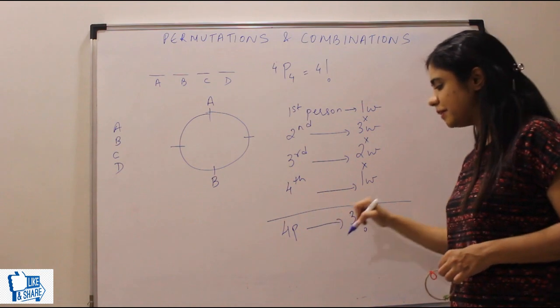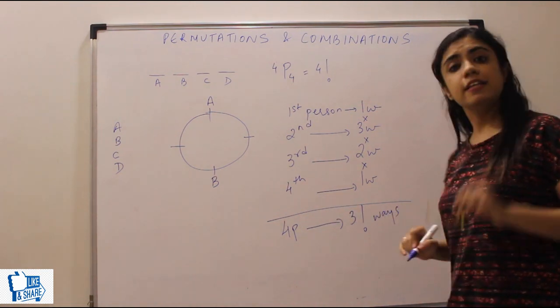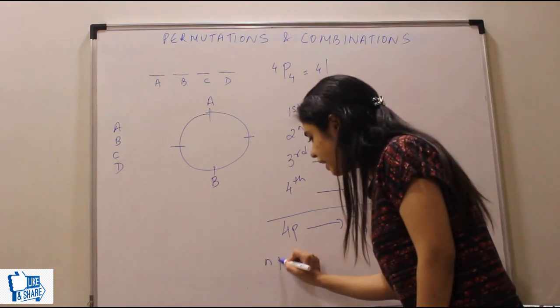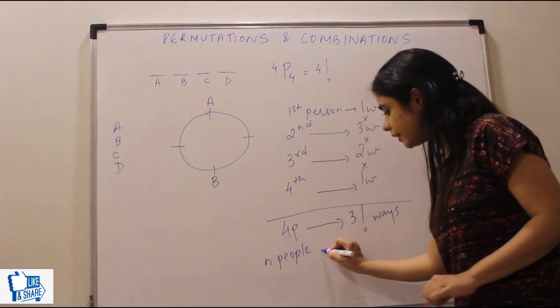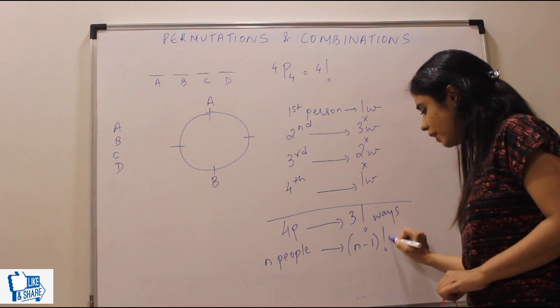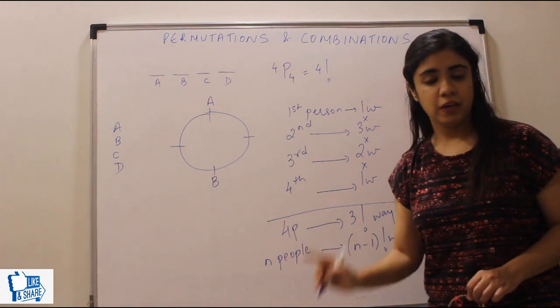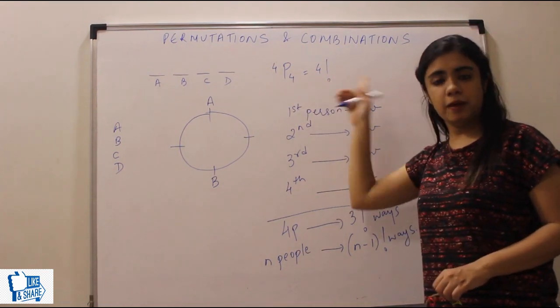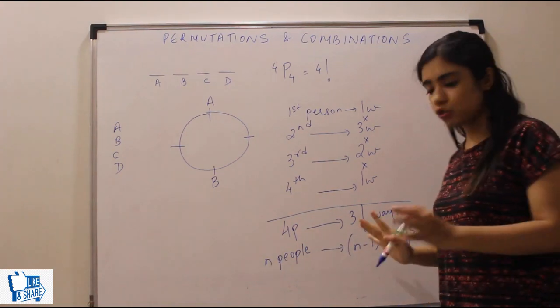So four people can be seated in 3 factorial ways. Similarly, if I have N people, N people can be placed in N-1 factorial ways in a circular arrangement. For a linear arrangement, N people have N factorial ways, but for a circular arrangement, N people have N-1 factorial ways. So this is how you can remember.